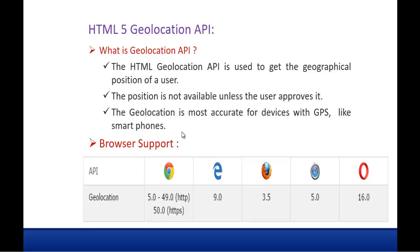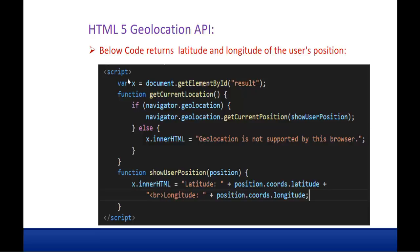The Geolocation API is supported in Chrome, Internet Explorer, Firefox, Safari, and Opera — above the specified version numbers. In this session, we are going to fetch the current position of a user in terms of longitude and latitude. Here is the code for that — it returns the latitude and longitude of the user's position.